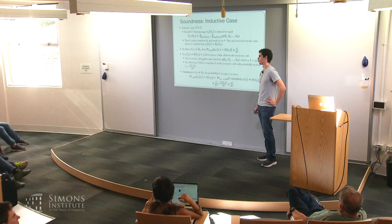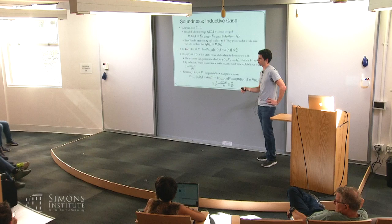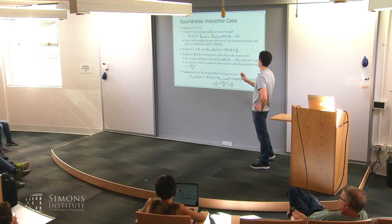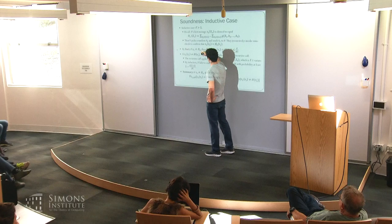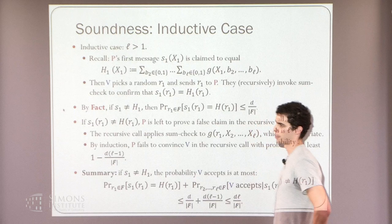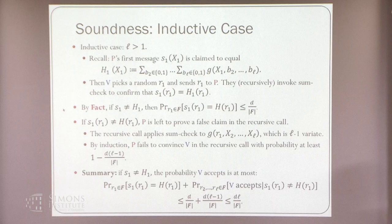Putting it all together: if the first message s₁ doesn't equal what it should, the probability the verifier accepts is bounded by two things: either the prover gets lucky in round one and r₁ is one of the few points where s₁ and h₁ agree despite being different polynomials, or the prover gets lucky in some later round bounded by the inductive hypothesis. The soundness error grows linearly with the degree of polynomial g.